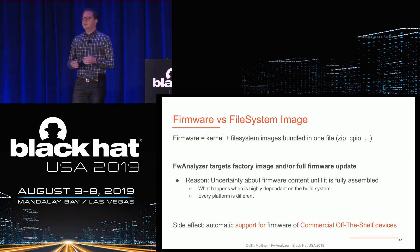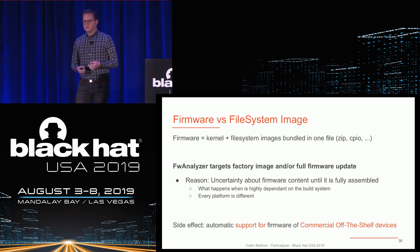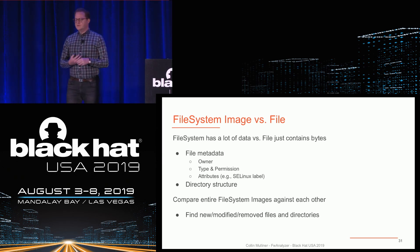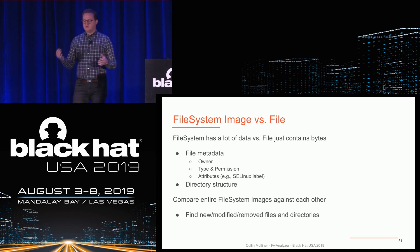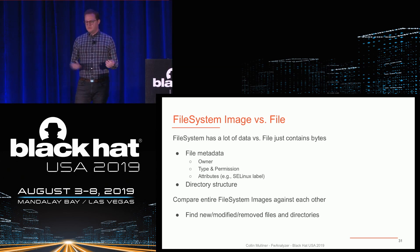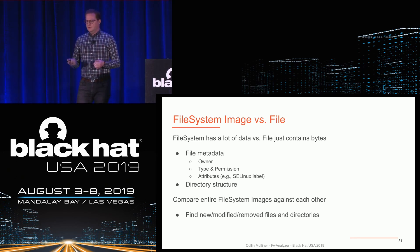The nice side effect of targeting full firmware is that you automatically get support for commercial off-the-shelf devices — if you just buy some device and get a firmware update, you can look at it. Why do we look at file system images versus just some files? Because we're not only interested in the content of the actual file, but also in all the metadata: file owners, types, permissions, attributes, things like SELinux labels, and directory structures. And we can actually compare entire file system images against each other — if you have two different versions of the same image you can just say, hey, what changed between them? That's a completely automatic feature, which you can't do if you just look at individual files extracted from a binary block file system.